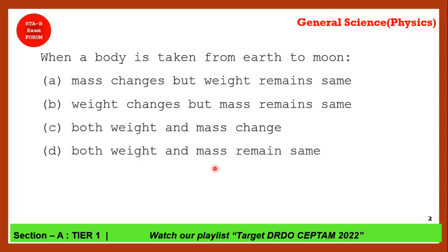When a body is taken from earth to moon, what happens? You need to understand the difference between mass and weight. Mass is a constant quantity — if you take any object from one planet to another or anywhere in the universe, mass remains constant. Weight depends upon the gravitational pull exerted by the planet, so it will change. The correct answer is: weight changes but mass remains the same — option B.